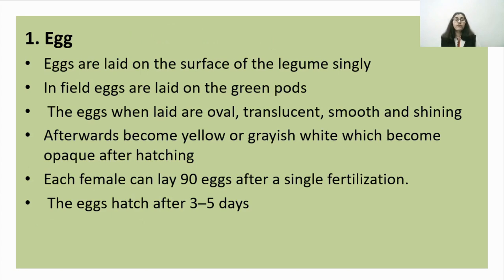The first stage of the life cycle is the egg. Eggs are laid singly on the surface of legumes — whether moong, arhar, chana or any other legume. In fields, eggs are laid on green pods. The eggs when laid are oval, translucent, smooth and shiny; they later become yellow or grayish white and then opaque. Each female can lay up to 19 eggs after a single fertilization, and the eggs hatch after 3 to 5 days.